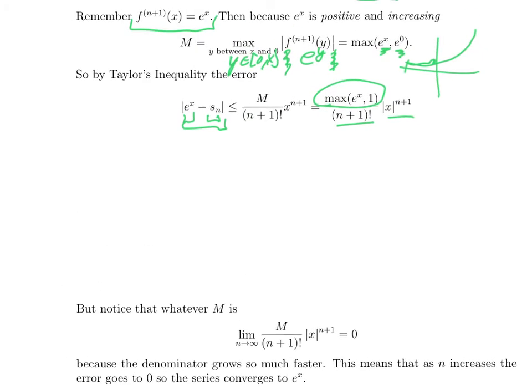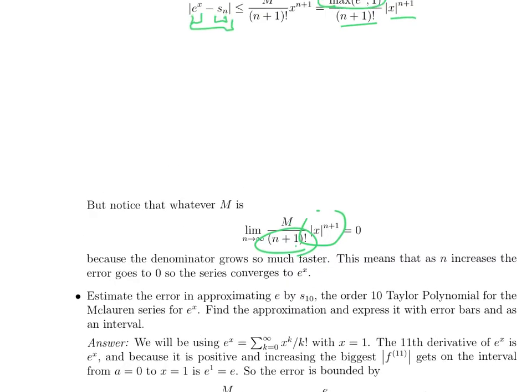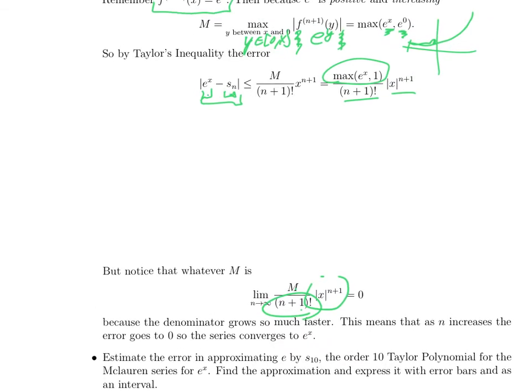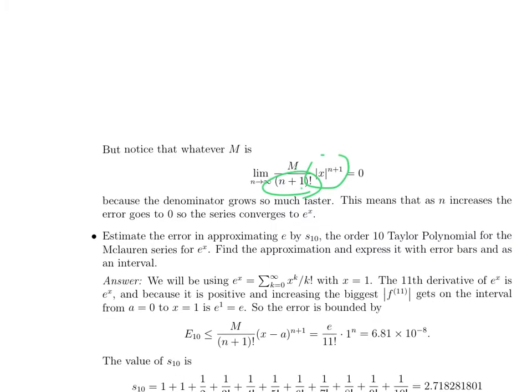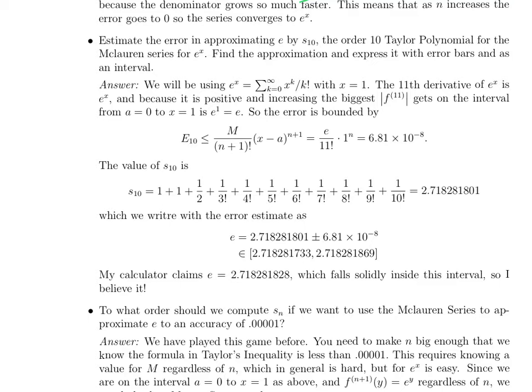That number is different for each x. But for any particular x, it's some number. So as n goes to infinity, M times absolute value of x to the (n+1) over (n+1) factorial is an exponential in n over a factorial. We know that goes to zero. So that means that the error between f and s_n goes to zero as n goes to infinity. That is to say that the Taylor series converges to e to the x. So that's how the argument will generally go. We relied heavily on the fact that we could find all the M's at once for all the different n's. So that made e to the x easier.